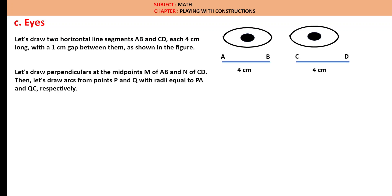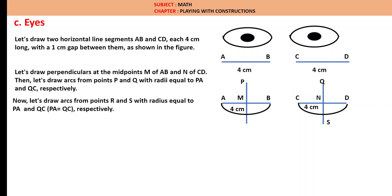Subsection C: Eyes. Let us draw two horizontal line segments AB and CD each of 4 cm. Let us draw perpendicular midpoints M of AB and N of CD. Then let us draw arcs from point P and Q with radii equal to PA and QC respectively. Now let us draw arcs from R and S with radius equal to PA and QC respectively. Now this is the closed figure we got.